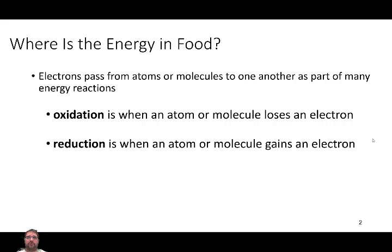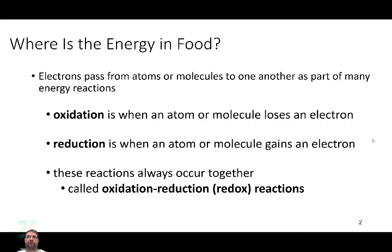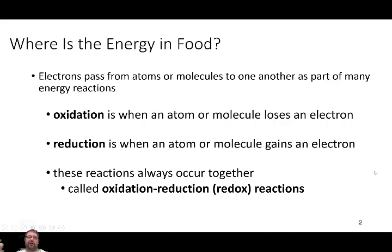The cool thing about this, and it shouldn't be a surprise to you, is that they occur always together. If you have a molecule or an atom that loses an electron, remember, nothing's created or destroyed. Energy is not created or destroyed. So, if you have something that's going to lose it, then you have to have something that's going to gain it. Because they always occur together, when we know how the reaction works, we often call it a redox reaction, or an oxidation-reduction reaction, where one molecule is losing an electron, one molecule is gaining it.